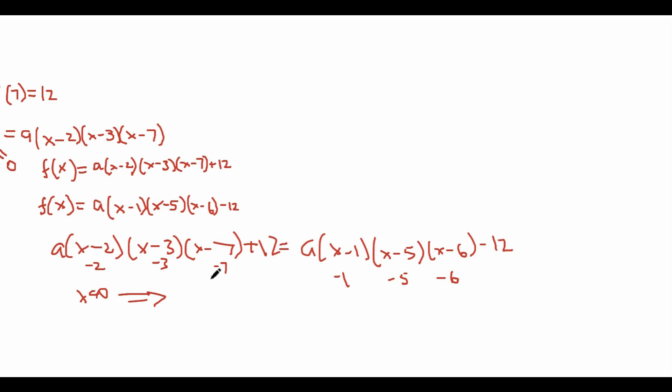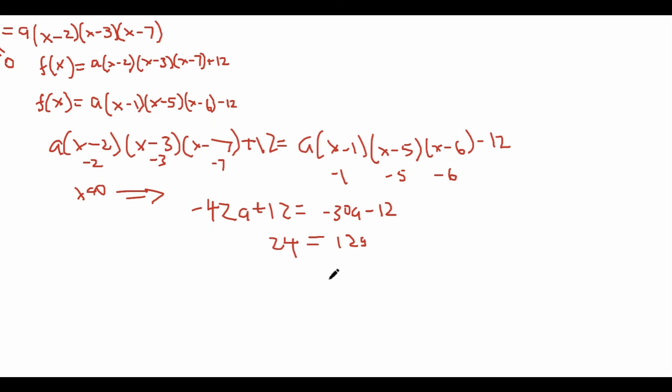And so we get that our equation is now -2 × -3 × -7, which is just -42. So we have -42a + 12 = -30a - 12. And solving for a here, we get 12a = 24, and we get a = 2.